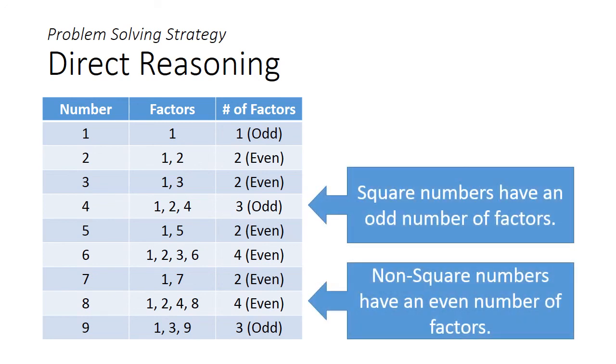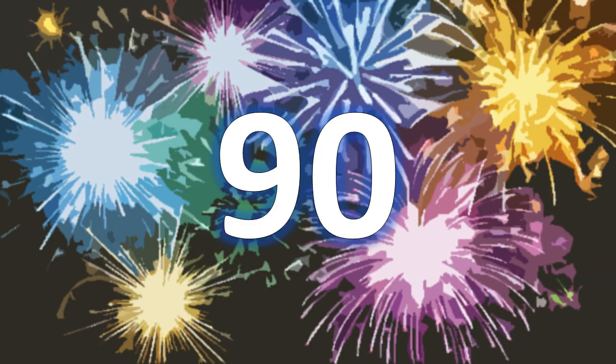When we examine the factors of each number, we will notice that non-square numbers from 1 to 100 will always have an even number of factors, whereas square numbers have an odd number of factors and those will stay open. Hence, we can conclude, as there are 90 non-square numbers from 1 to 100, these 90 lockers will remain closed.